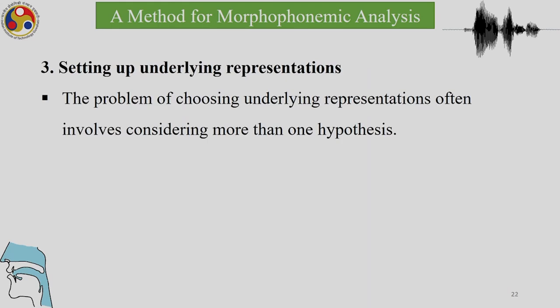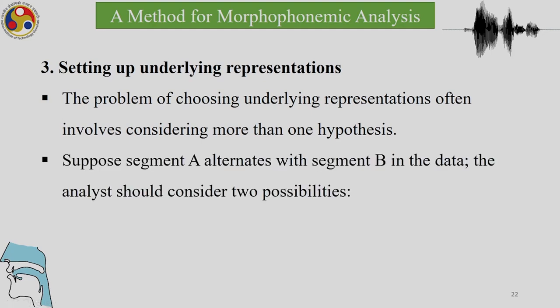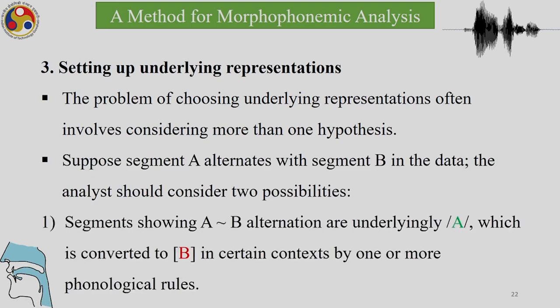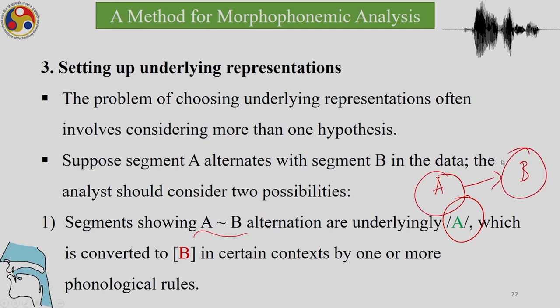Setting up underlying representations involves choosing among hypotheses. Suppose segment A alternates with segment B in the data. The analysis should consider two possibilities: underlying A, which is converted to B in certain contexts by morphophonological rules; or underlying B, which stays as B in its context but is converted to A in certain other contexts by one or more morphophonological rules. When there is an alternation, something changes to something else.